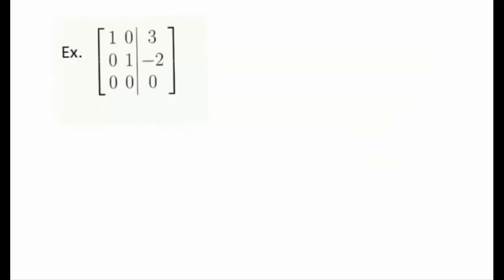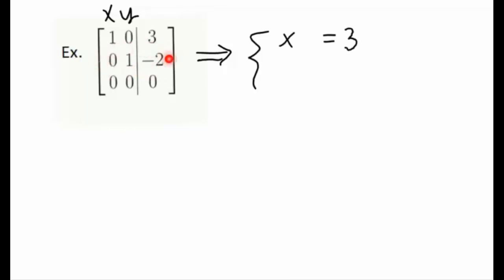Let's take a look at what the reduced row echelon form of a unique solution might look like. Given this matrix, we can transfer it back into a linear system. Assuming variables x and y, row one says x plus zero y's equals three. Row two says zero x's plus one y equals negative two. Row three says zero x's plus zero y's equals zero.